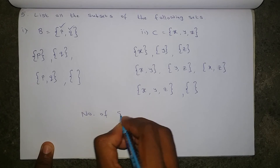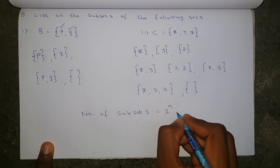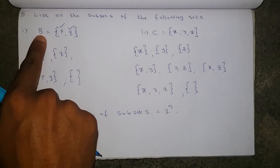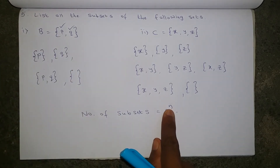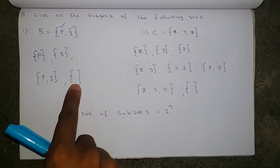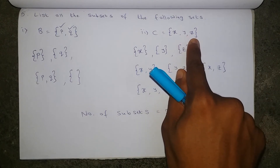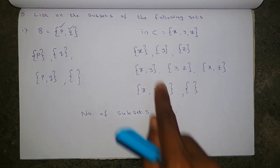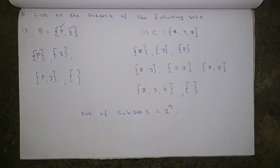The formula for the number of subsets is 2^N, where N is the number of elements in the given set. For set B with 2 elements: 2^2 = 4. Counting the subsets we listed — 1, 2, 3, 4 — yes, all four are covered. For set C with 3 elements: 2^3 = 8. Counting confirms all eight subsets are covered.